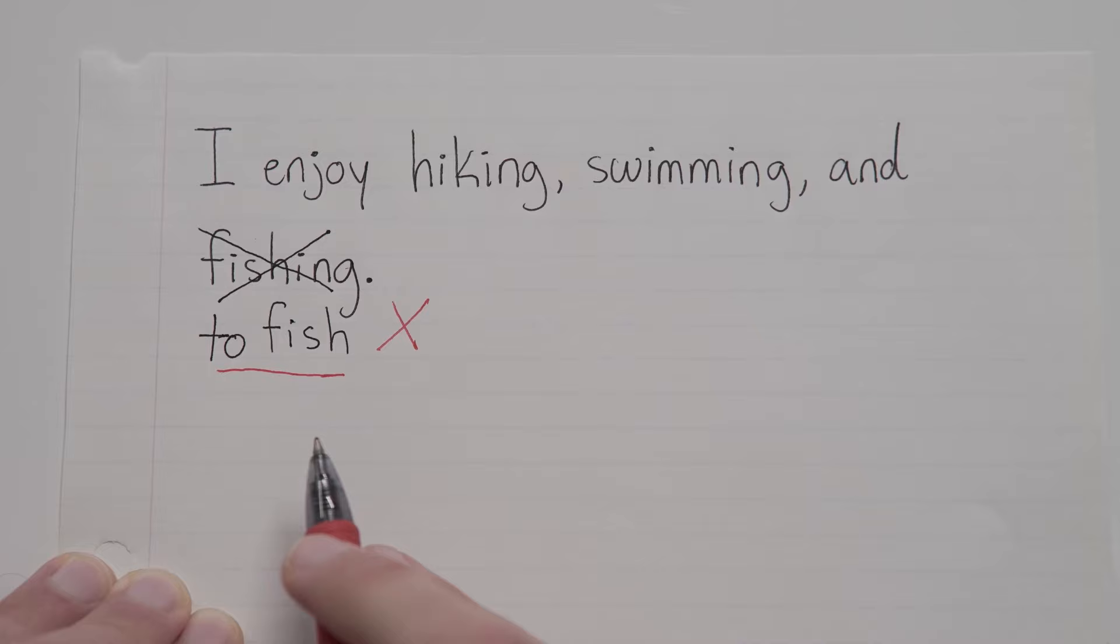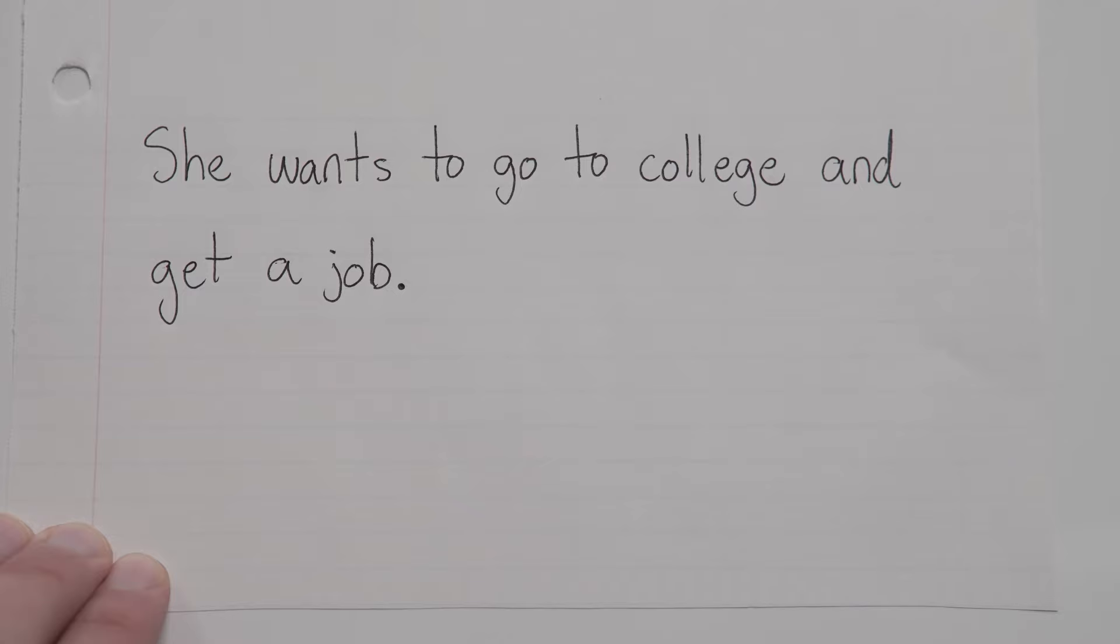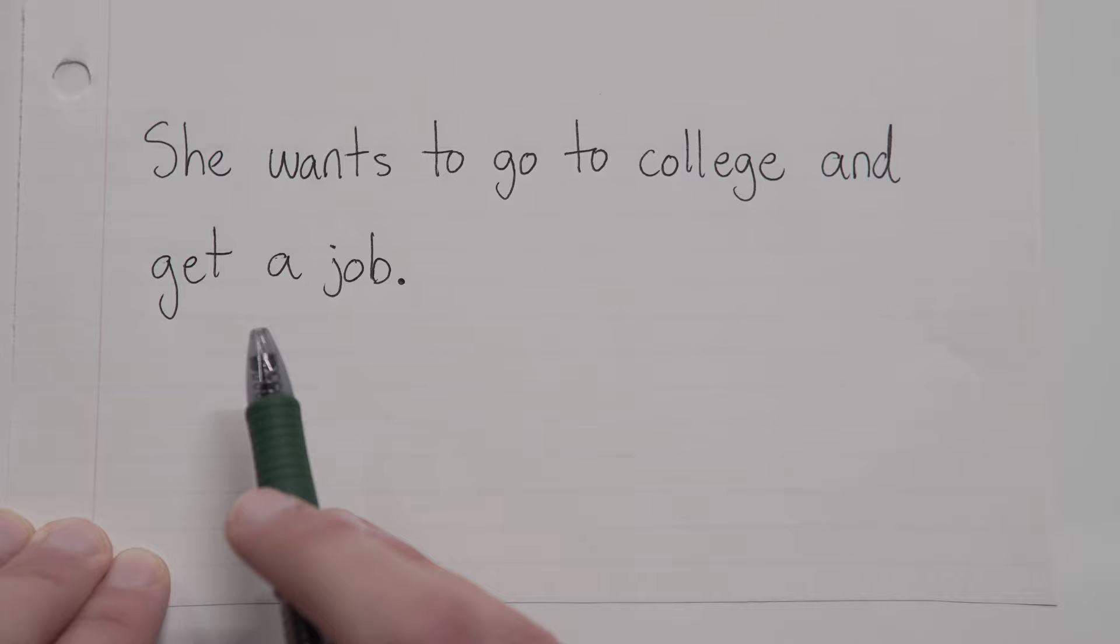Let's look at another one. She wants to go to college and get a job. Now, this is also parallel, but my question for you is what two things are parallel here? Answer is, go to college and get a job. Those phrases are both written the same way. Go to college is an action, and get a job is an action. And they're both written in the same tense. So we're good.